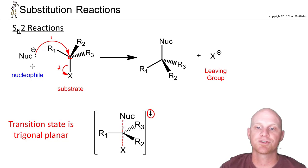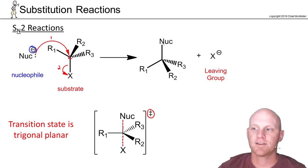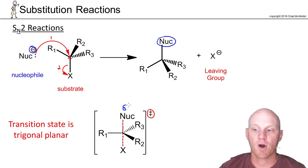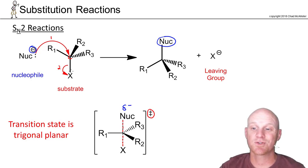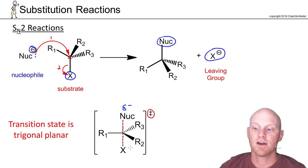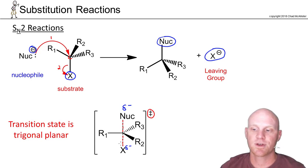Partial charges are also labeled in the transition state. The nucleophile starts negative and ends neutral, so it's partially negative in the transition state. The leaving group starts neutral and ends negative, so it's also partially negative in the transition state.